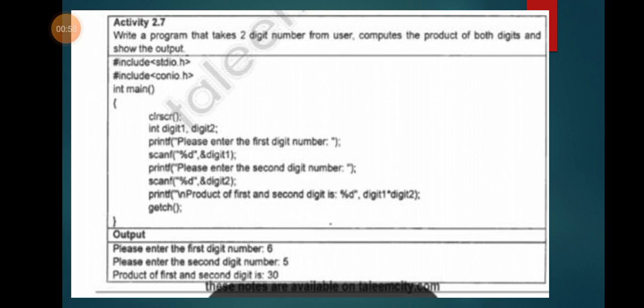Now printf statement: please enter the first digit number. Then we will enter the second digit number. Scanf statement modulo d and digit1. Then in the second statement, printf second digit number. Then we have to find the product.